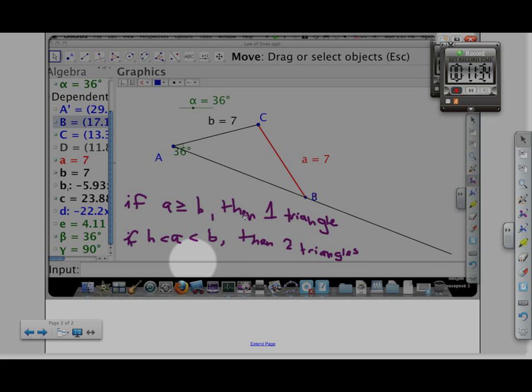If it's bigger than the other side, or B, then you're going to have one triangle. Or if it's equal to B, you're going to have one isosceles triangle. And finally, if it's in between H, which is the minimum value, and B, which is the other side that we're given, then you're going to have two triangles.